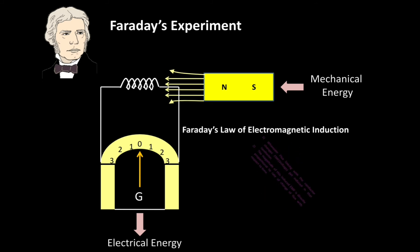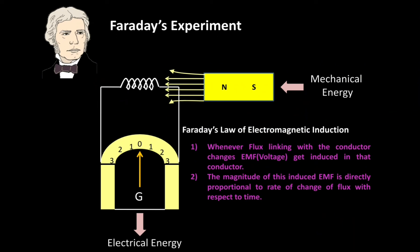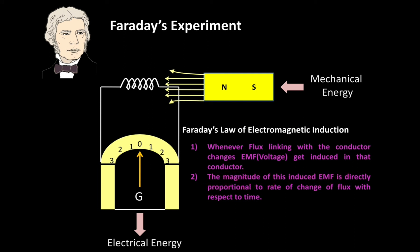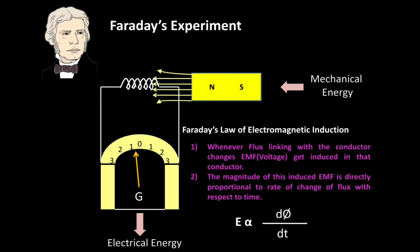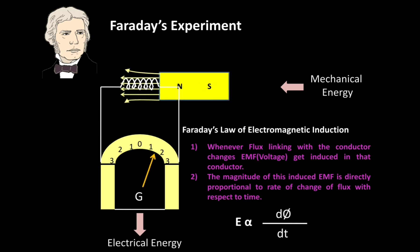According to this statement, whenever flux linking with a conductor changes, EMF or voltage gets induced in that conductor, and the magnitude of this induced EMF is directly proportional to the rate of change of flux with respect to time. So to have induced EMF or induced current in the coil, there must be a rate of change of flux with respect to time.